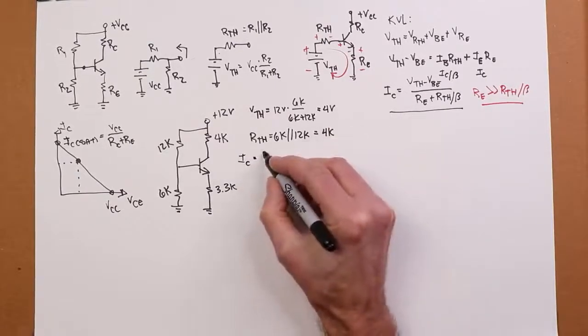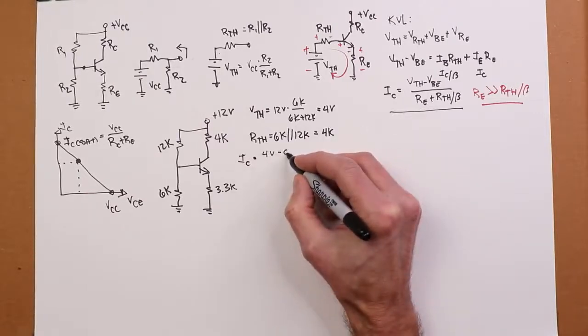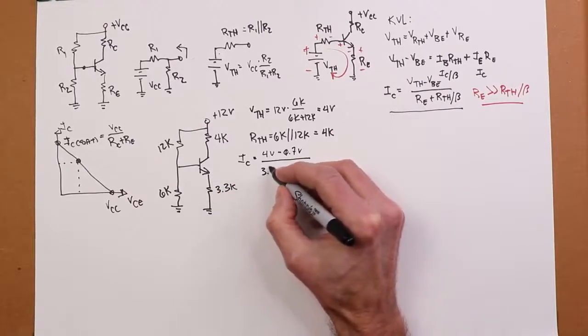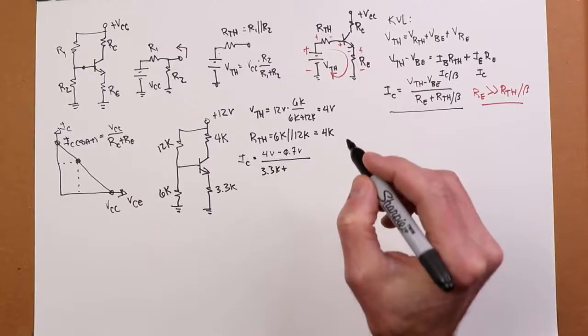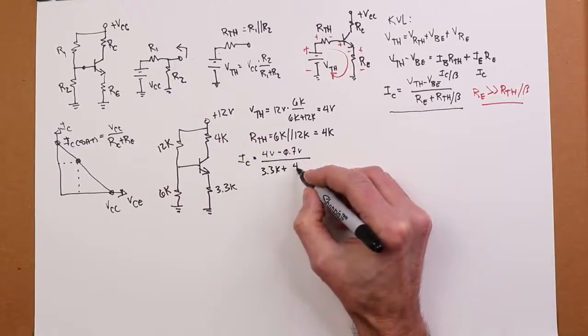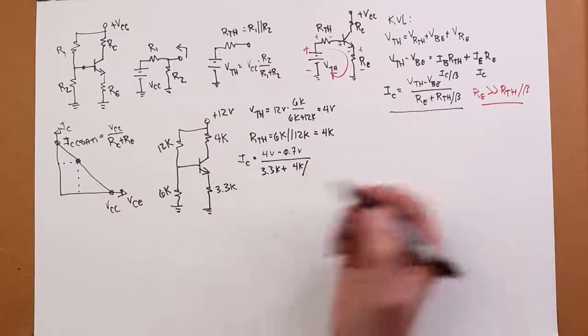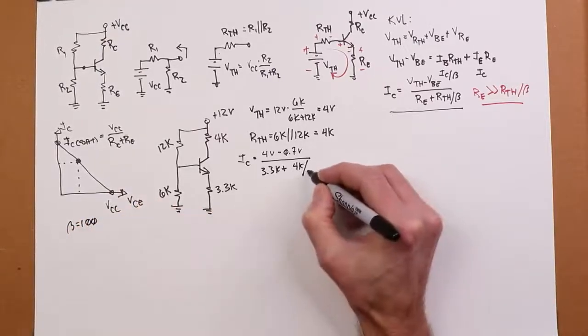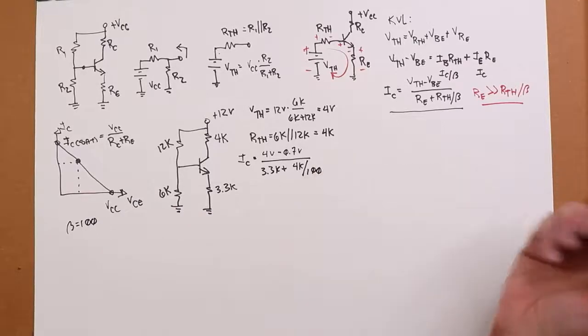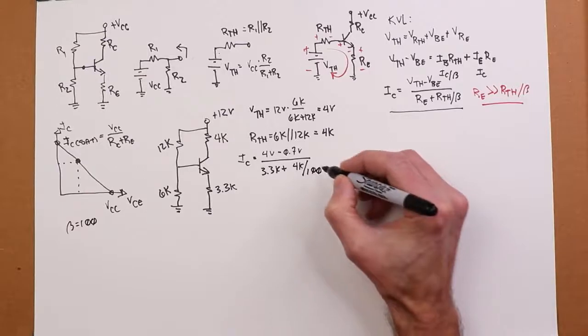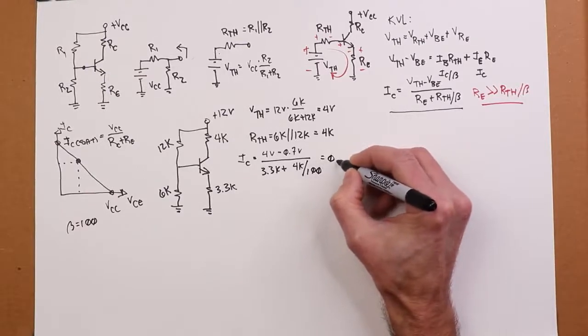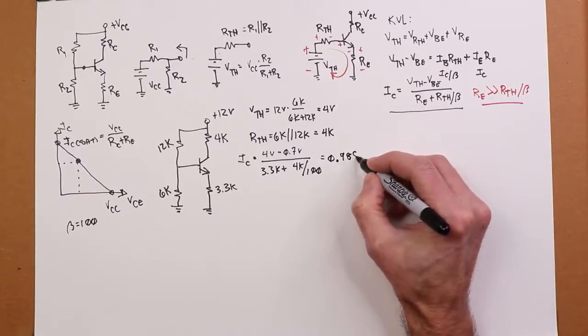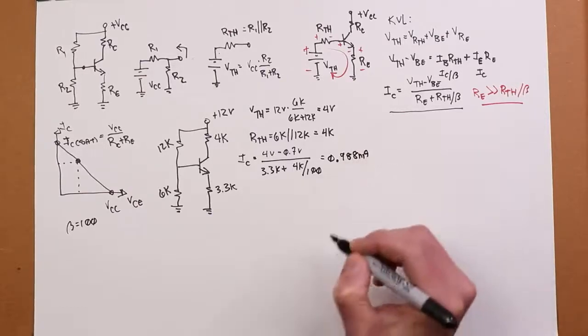Take our 4 volts, minus VBE, which we expect to be about 7 tenths. Our RE is 3.3K. Our R-thevenin is 4K. And, you know, we've been using a typical beta of 100, so I think I'll just continue with that. Not that it's going to make any major difference, as we'll see. But we grind this out, and we are going to get 0.988 milliamps out of this.